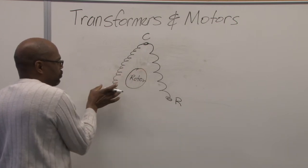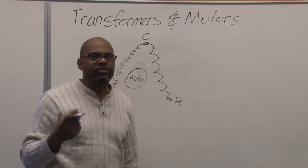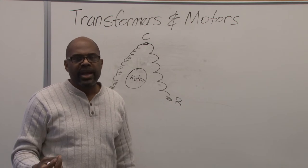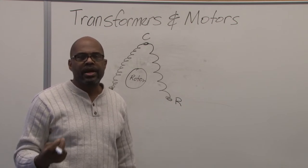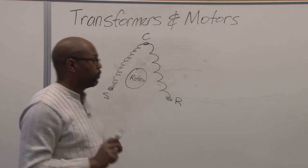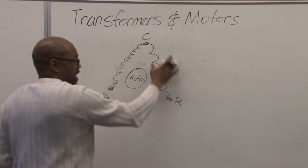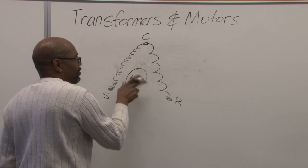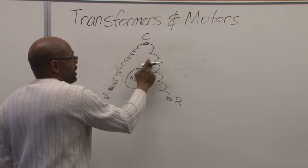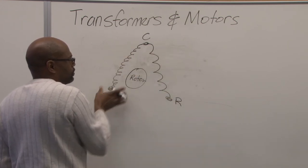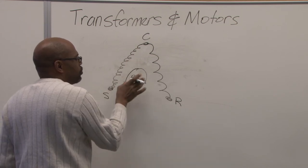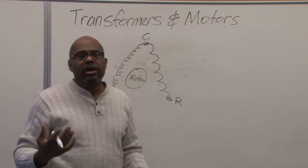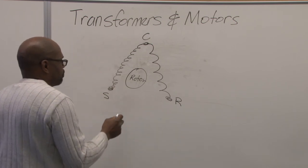However, the start winding, because it's so many turns and very small wires, it pulls extremely high amperage during startup and it cannot stay in the circuit. If it stays in, it will end up damaging or burning up the motor. However, the run winding is the winding used to keep the rotor turning after it starts up. So both of these are inductive coils, which induce into a rotor to cause rotation to make the motor operate. So we call this type of motor a split phase motor.